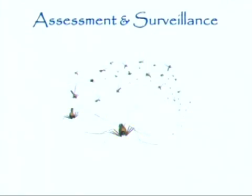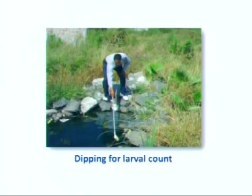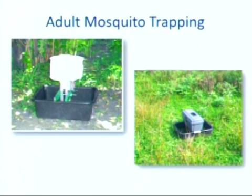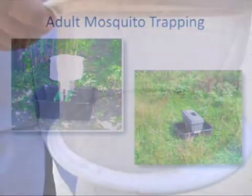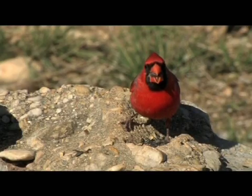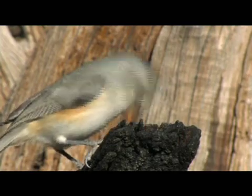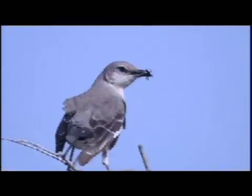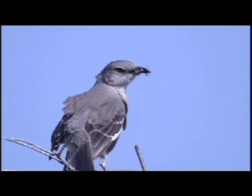When we talk about assessment and surveillance, we talk about doing a larval count using a dipper to determine whether we have mosquito breeding in a given body of water. We also set out mosquito traps to catch the adults. We will have over 90 trap sites collected each week this year to determine whether we have not only mosquito breeding but the presence of disease. We also rely on dead bird reporting — citizens call 311 to report dead birds and we chart them on a map. If there's an abundance in any given area and we don't already have a mosquito trap there, we will place one to determine whether disease is present.